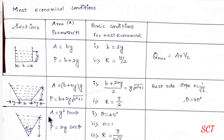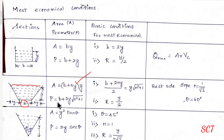Next, trapezoidal section. Base width b, top width B plus 2ny. Area equal to (B plus ny) into y. Perimeter equal to B plus 2y times square root of (n squared plus 1). These are the basic conditions for most economical trapezoidal section.